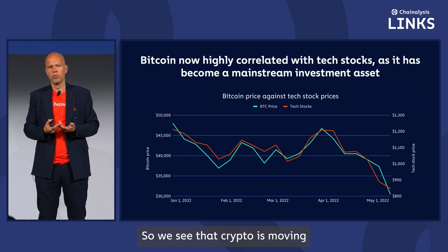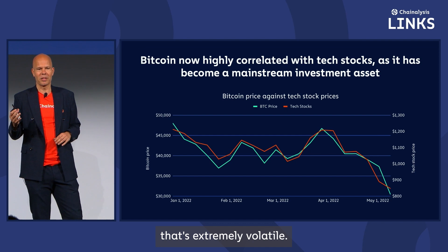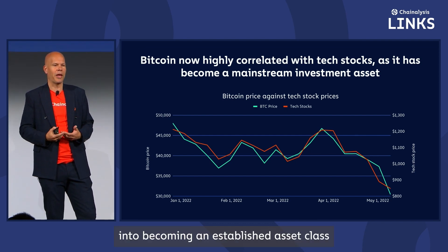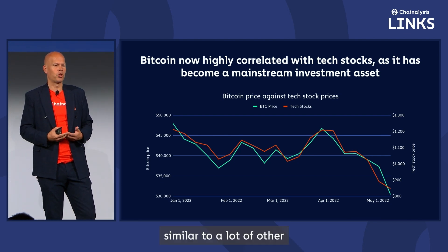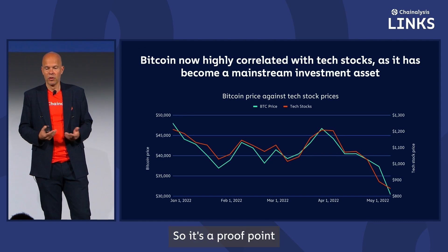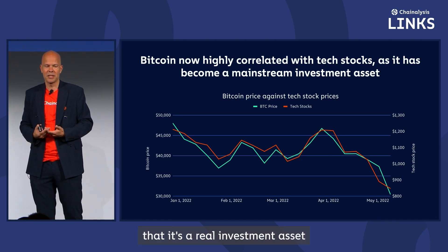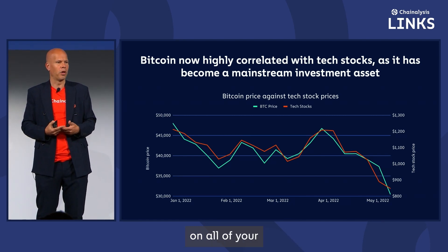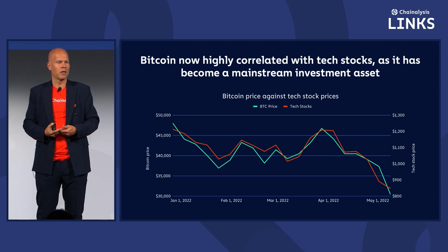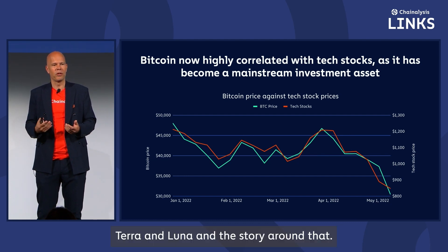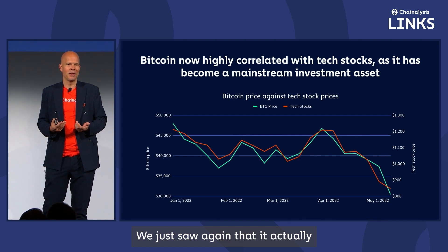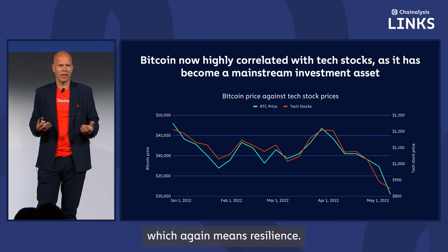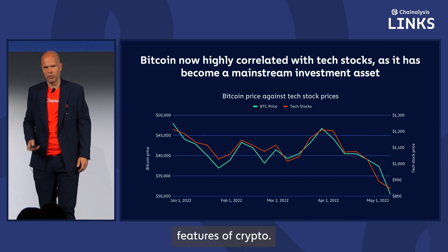The way that I see this is that we're watching an asset class maturing. Crypto is moving from being this new thing that's extremely volatile — you can't claim that anymore. It's moving to become an established asset class similar to a lot of other pieces of finance. It's a proof point that it's a real investment asset and that there's resilience in the market. We just saw again that the Terra and Luna situation didn't impact crypto much more than it impacted anything else. It was isolated, which again means resilience, and that's one of the core features of crypto.